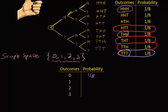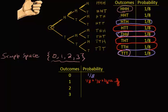We add up the probabilities of each of those simple outcomes: one-eighth plus one-eighth plus one-eighth for a total of three-eighths. So the probability of getting one head is three-eighths. For two heads, we find two heads three times in the sample space as well, so again we add one-eighth three times — that's also three-eighths.